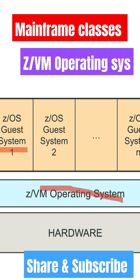Each of the virtual machines is called a guest system. As shown in this picture, it shows JOS guest system 1, guest system 2, guest system 3, 4, and up to n number of guest systems you can provision in JOS.